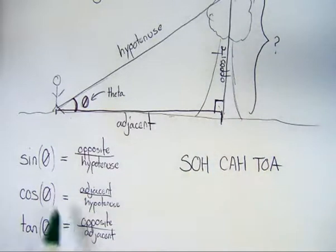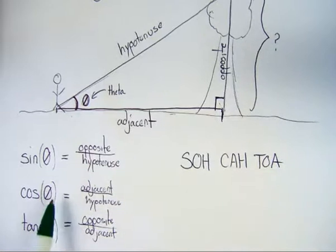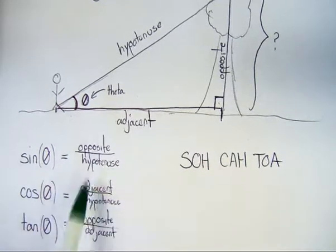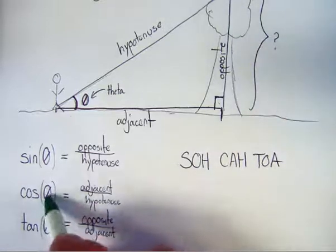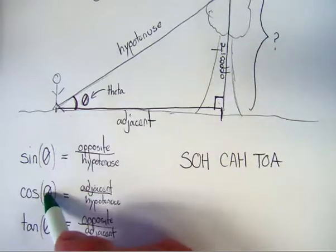That means that using one of these functions, and notice cosine has theta and the length of the adjacent in it, I can now find the length of that opposite side by plugging in my angle for cosine.